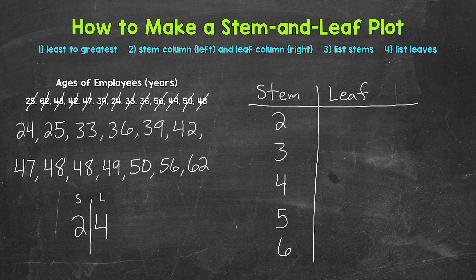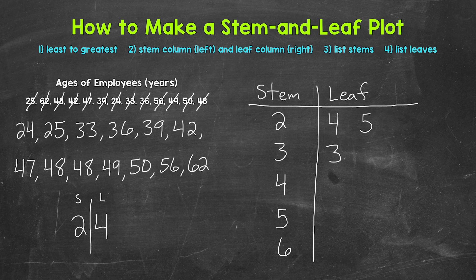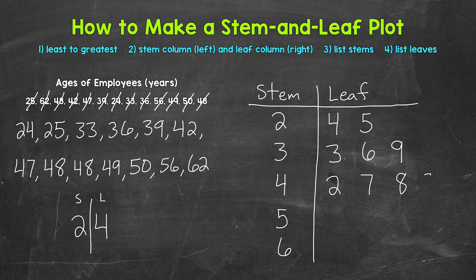Now we need to list our leaves, and we will start with 24 and go in order. For 24, we have a stem of 2 and a leaf of 4. Next, 25 — stem of 2, leaf of 5. Next, 33 — we move down to stem of 3, leaf of 3. Then 36 — stem of 3, leaf of 6. Then 39 — leaf of 9. Now 42 — move down to stem of 4, leaf of 2. Then 47 — leaf of 7. Then 48 — leaf of 8. Another 48 — another leaf of 8. Then 49 — leaf of 9.